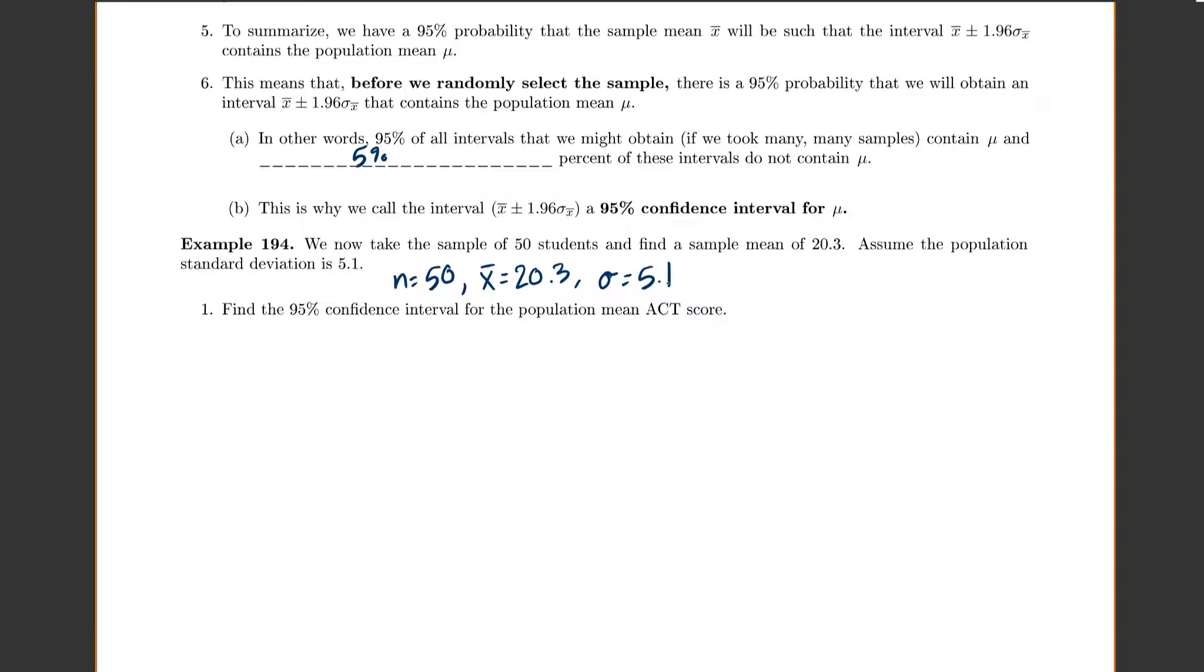Let's find the 95% confidence interval for our population mean ACT score. So our formula, just from up above, was x-bar should be within 1.96 standard deviations of mu. Or, since I haven't actually found sigma of x-bar yet, sigma of x-bar is equal to sigma over square root of n, because I do know both of those values. So our x-bar is 20.3 plus or minus 1.96 times 5.1 over the square root of 50.